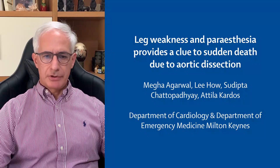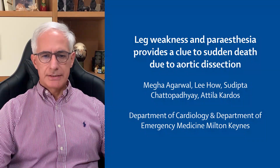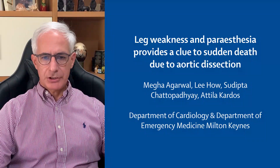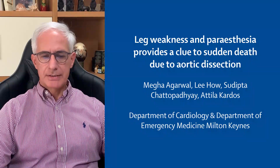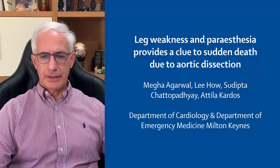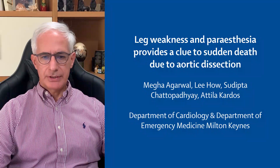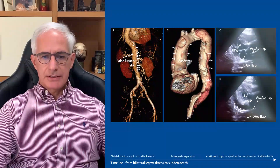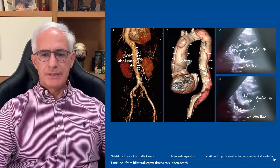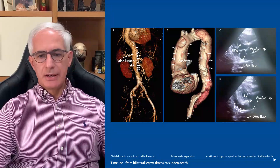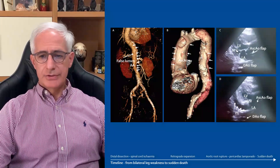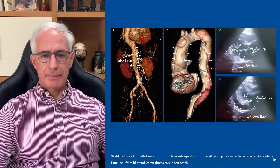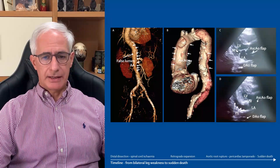This is a video summary of our case entitled 'Leg Weakness and Paresthesia Provides a Clue to Sudden Death Due to Aortic Dissection.' An 86-year-old man was admitted to the hospital after a fall associated with sudden severe lower back pain and leg weakness.